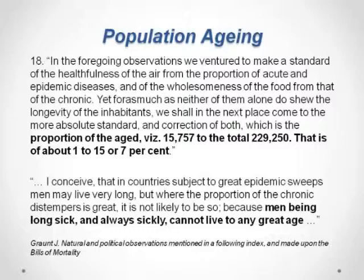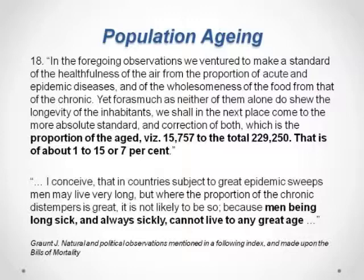Graunt was also able to extract useful information about population ageing. He estimated that the proportion of the aged was about one in fifteen, or seven percent. Our best estimate for the beginning of the 20th century was about five percent regarded as old — 65 and over. So again, Graunt was many generations beyond his time in terms of these sorts of insights.